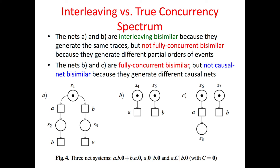The nets B and C are fully concurrent bisimilar but not causal net bisimilar because they generate different causal nets.